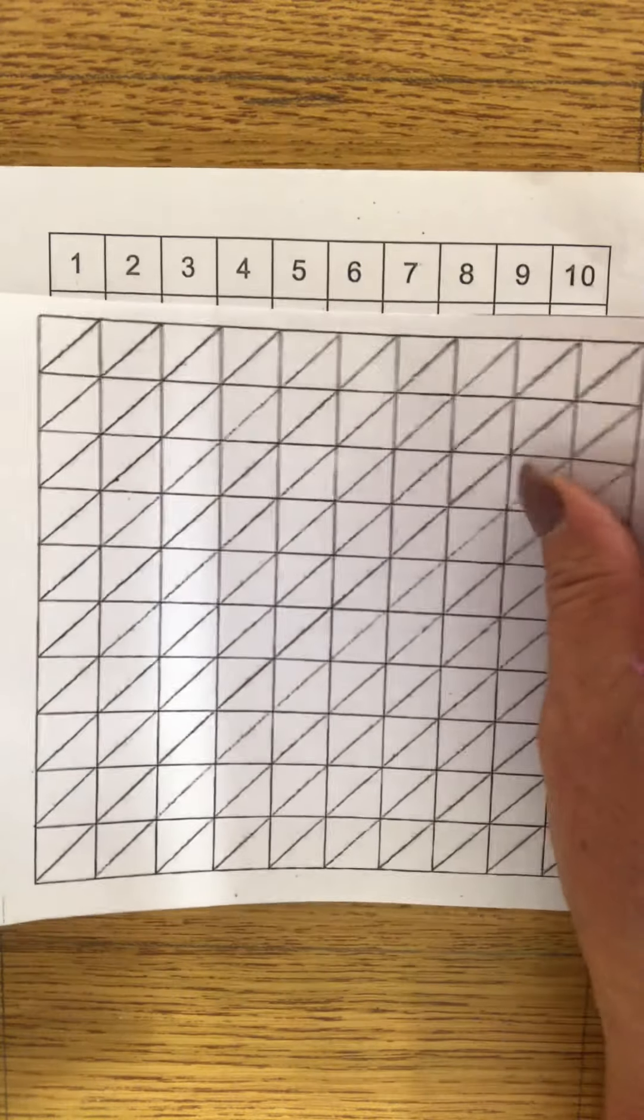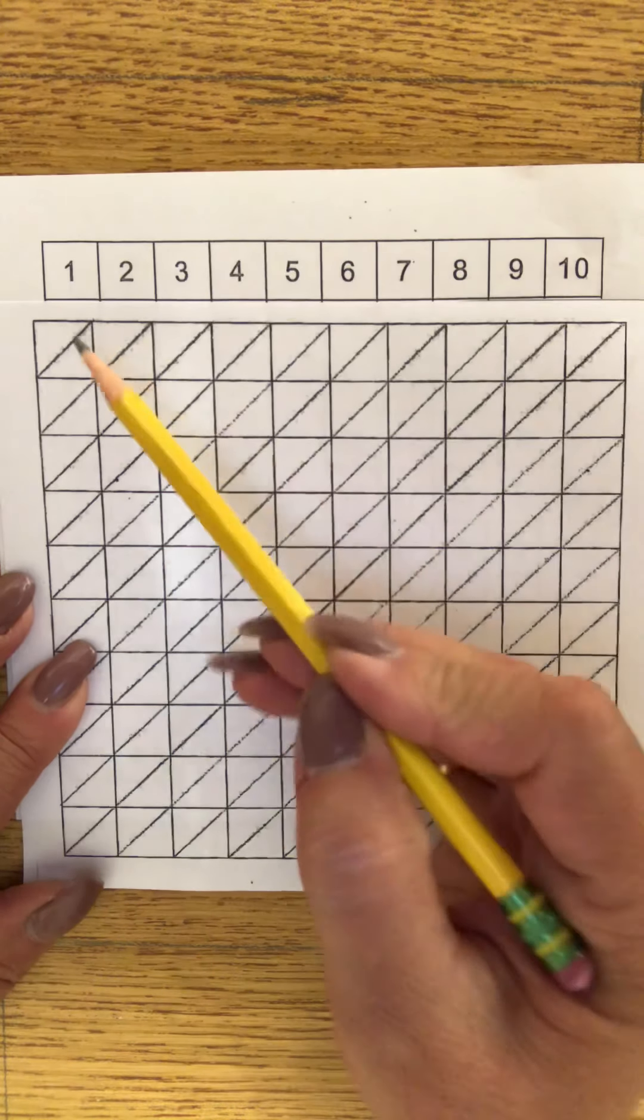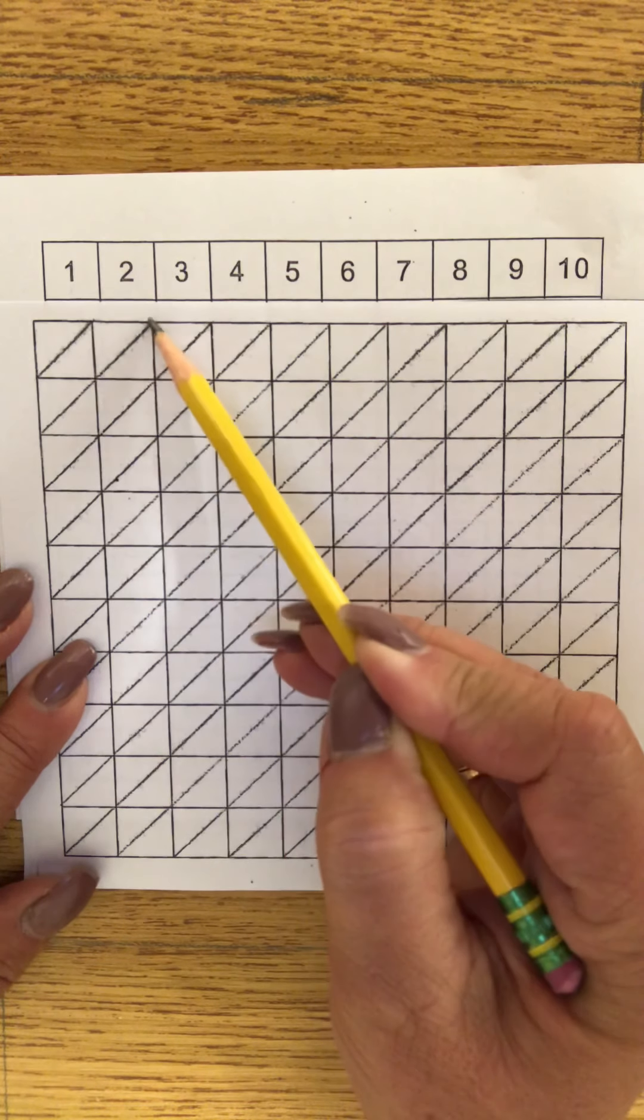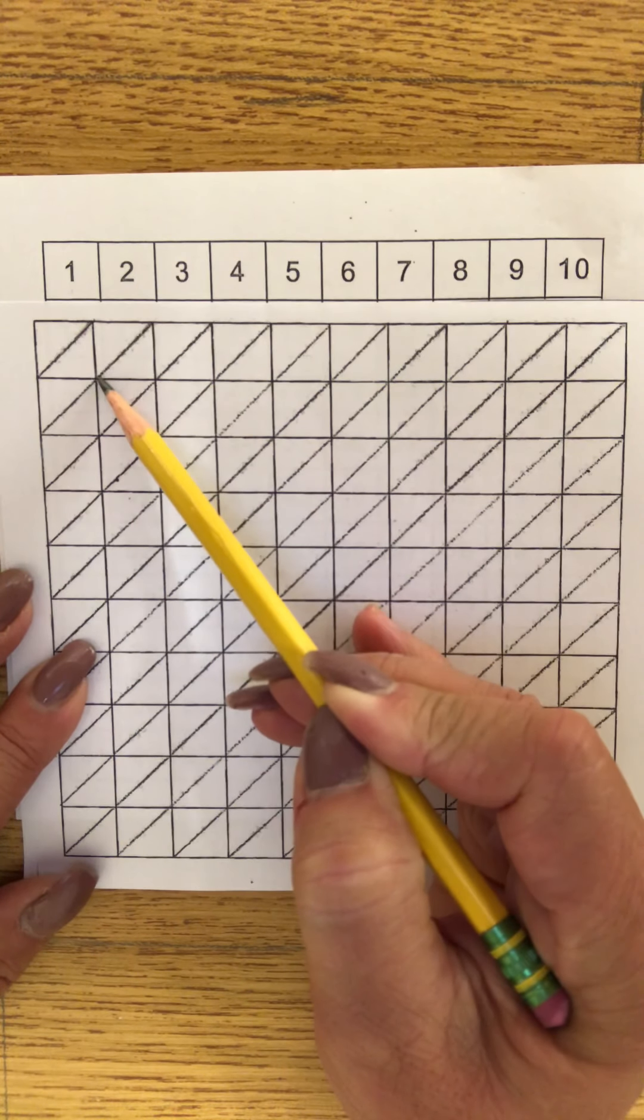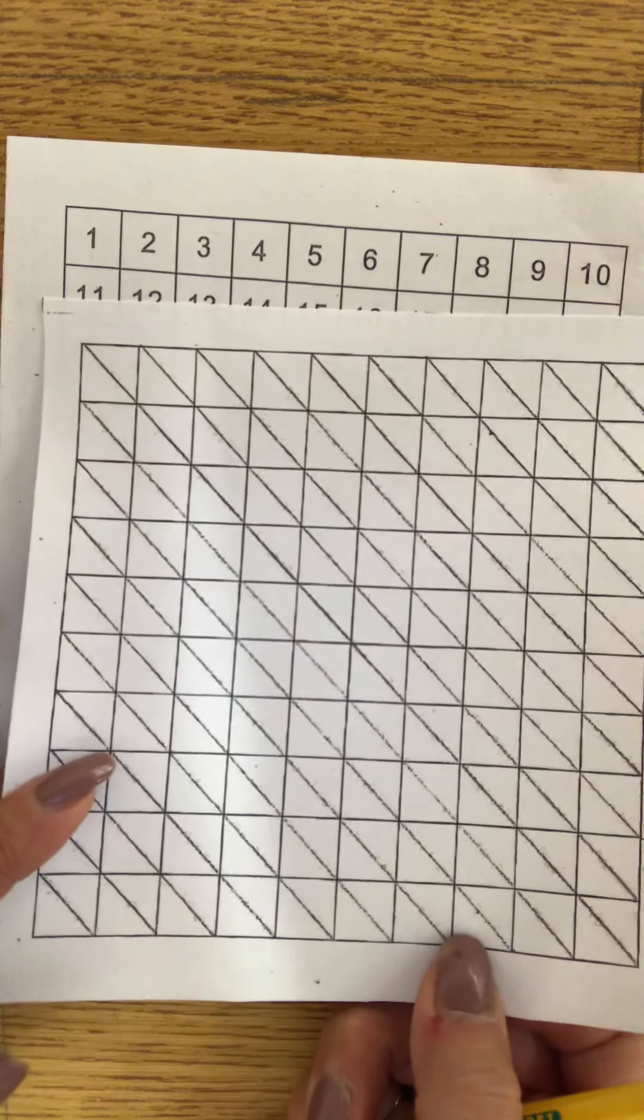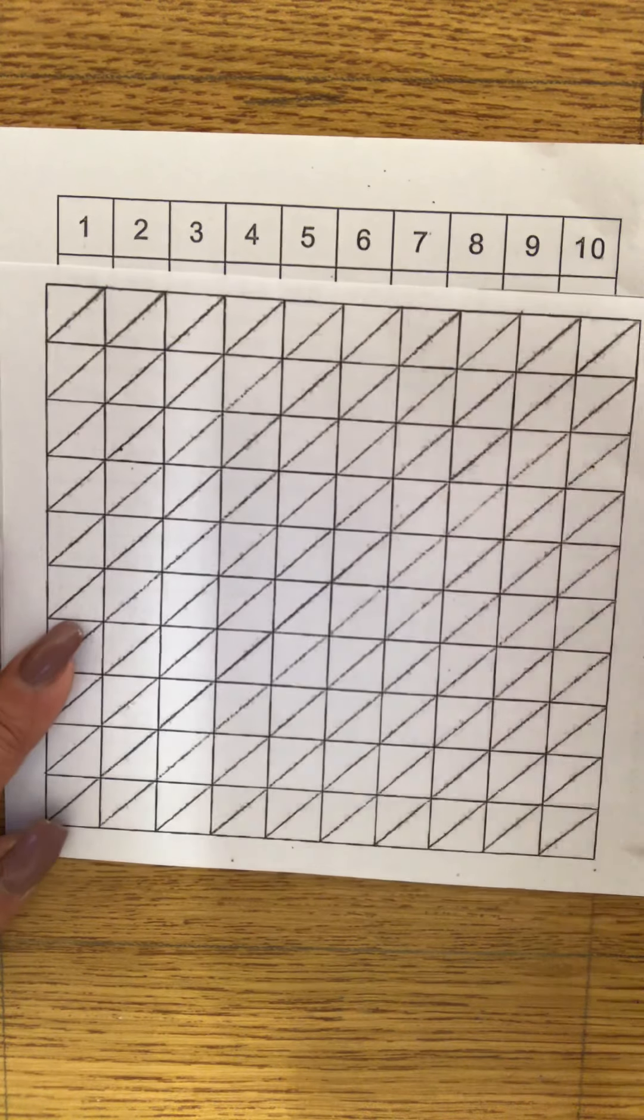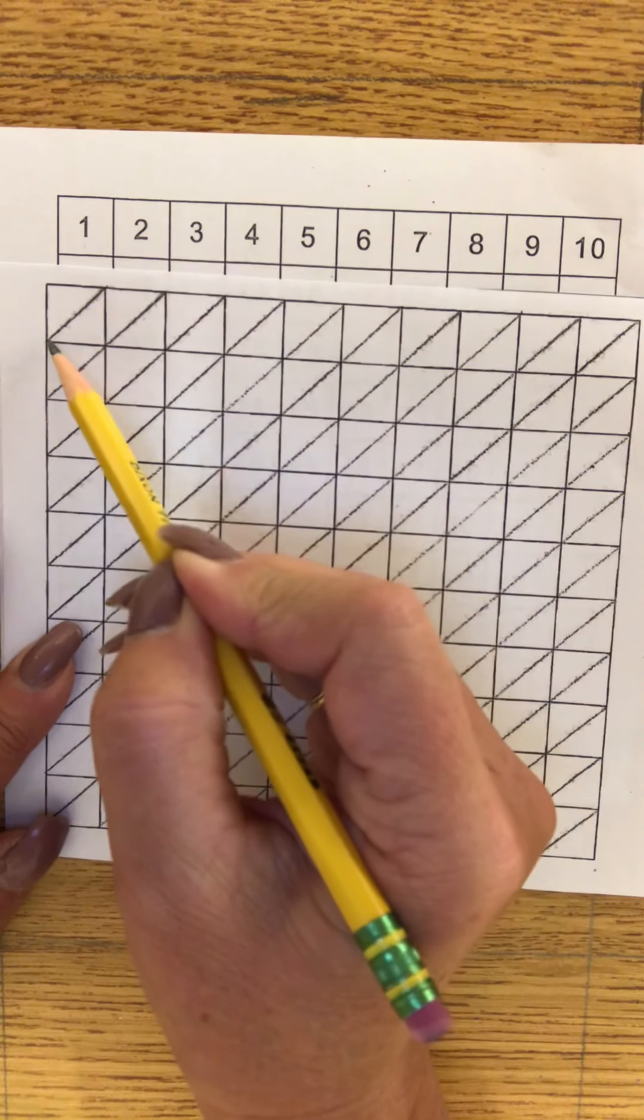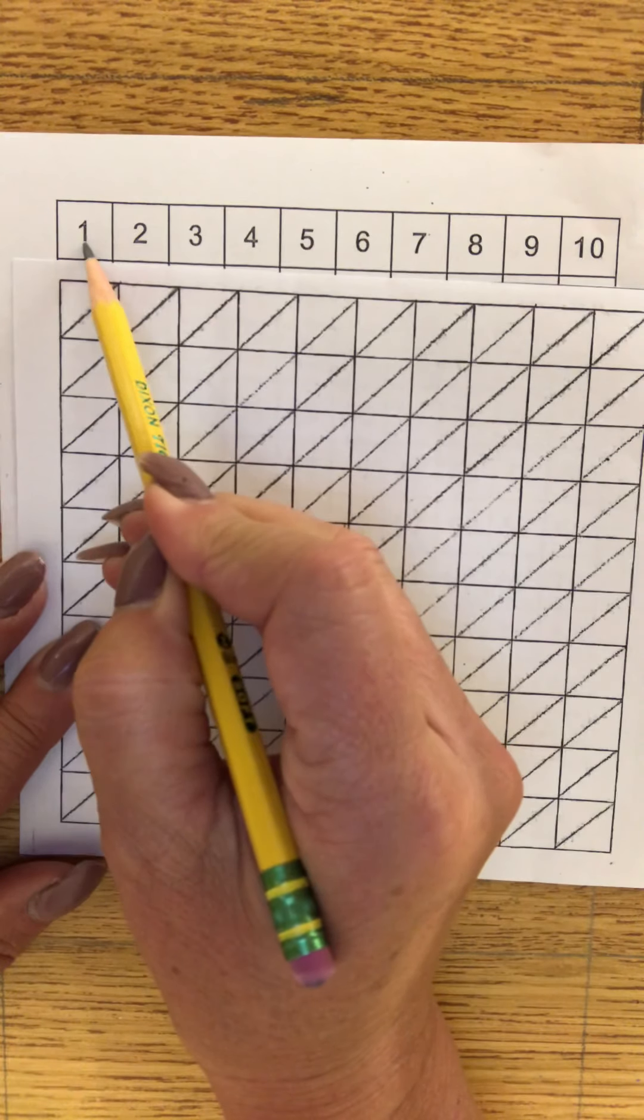So let's look at the first row. Each square is divided with a diagonal line from the top right to the bottom left. You need to make sure it's facing the right way. If it's going this way it won't work, it'll be kind of backwards. So you need to make sure your diagonals are going this way, top right to bottom left.